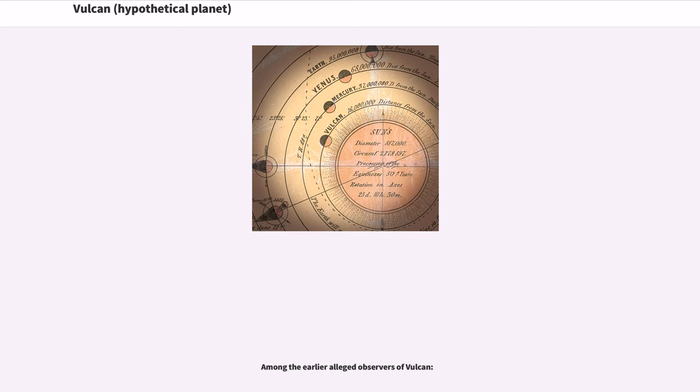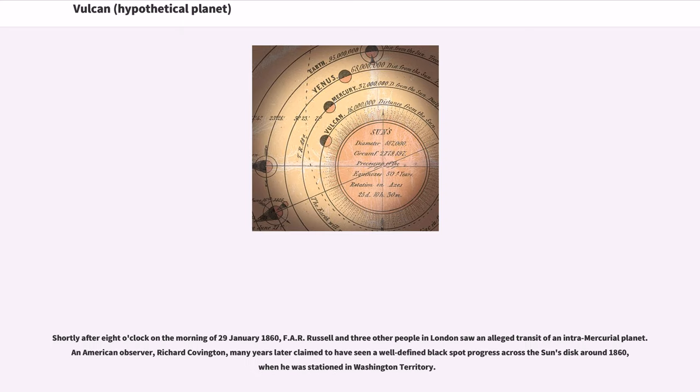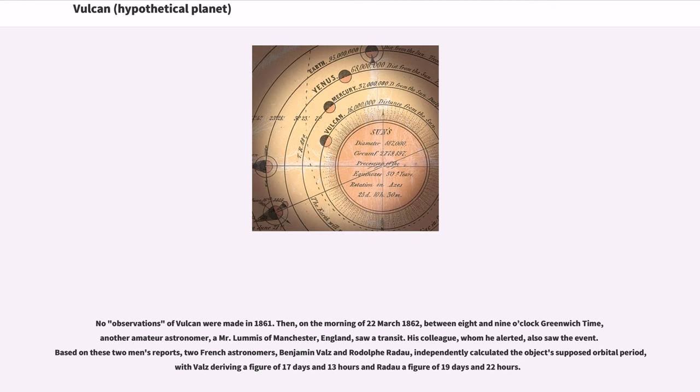Among the earlier alleged observers of Vulcan: Shortly after 8 o'clock on the morning of January 29, 1860, F.A.R. Russell and three other people in London saw an alleged transit of an intramercurial planet. An American observer, Richard Covington, many years later claimed to have seen a well-defined black spot progress across the Sun's disk around 1860, when he was stationed in Washington Territory.